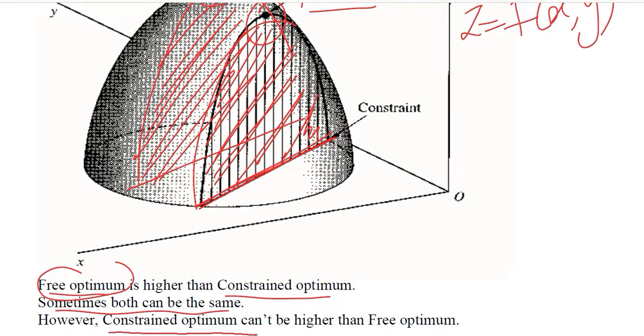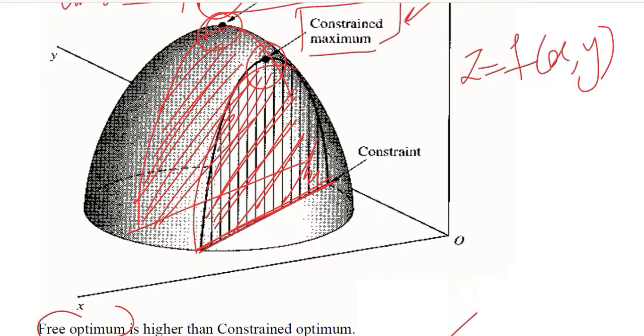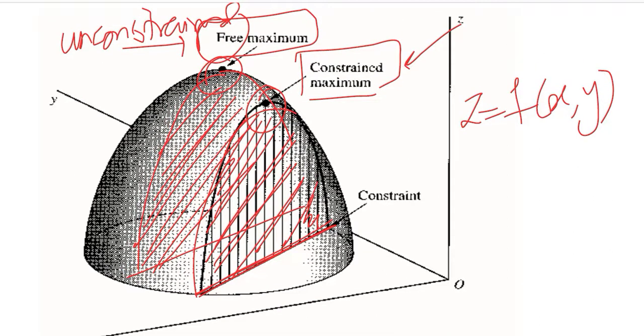However, constrained optimum cannot be higher than the free optimum. Definitely we cannot have a constrained optimum which is higher than the free optimum. It can be the same, but definitely constrained optimum cannot go here somewhere. So this is also not possible.